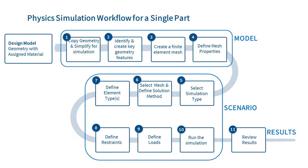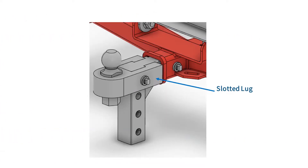In 3D Experience, there are 11 steps to performing a physics simulation for a single part. Starting with a design model, we will take you through the first four steps associated with creating a simulation model. We will use the slotted lug component from a trailer hitch assembly. In the video 'Basics of Element Selection,' we showed you the logic behind designing the mesh for this component. In this video, we will show the exact steps to creating this model in 3D Experience.